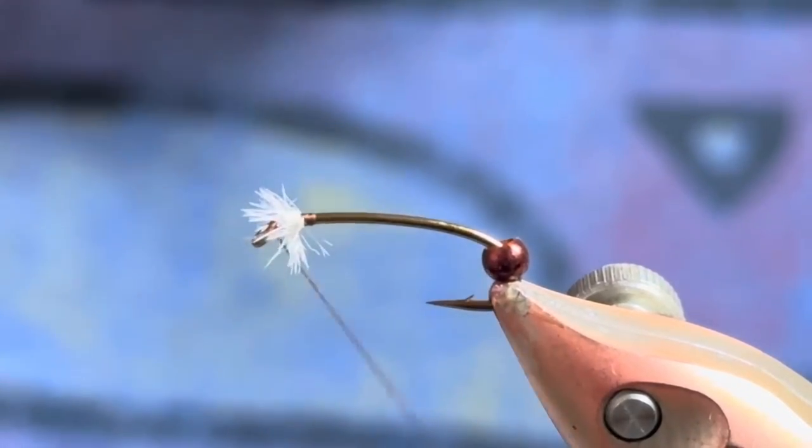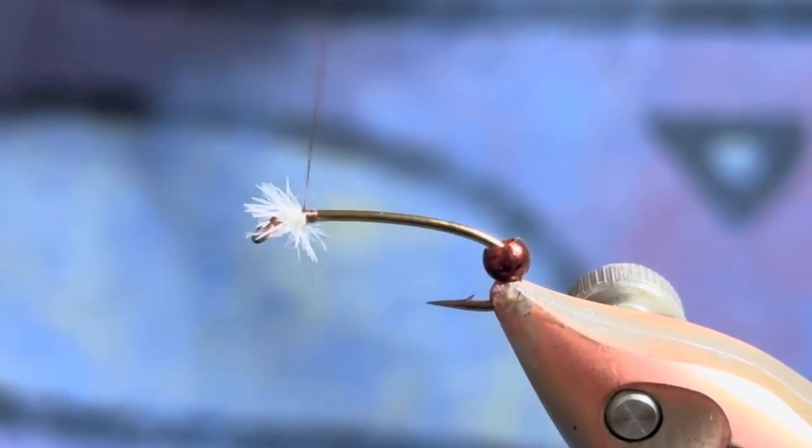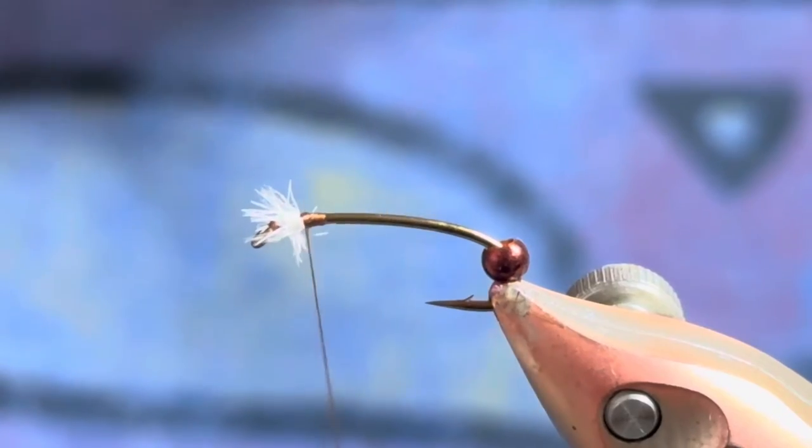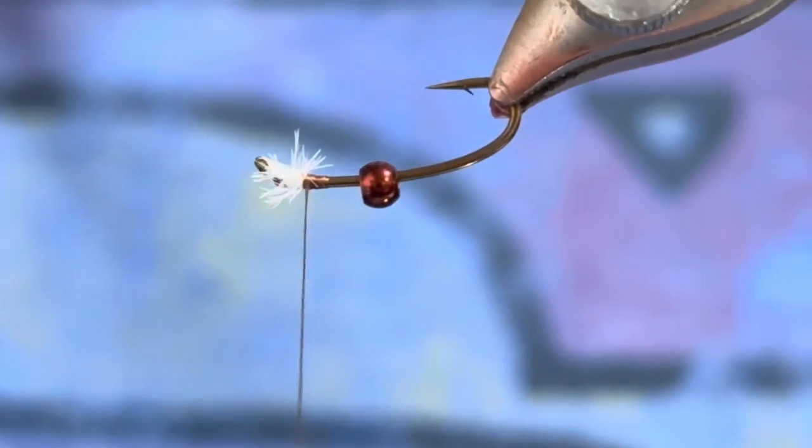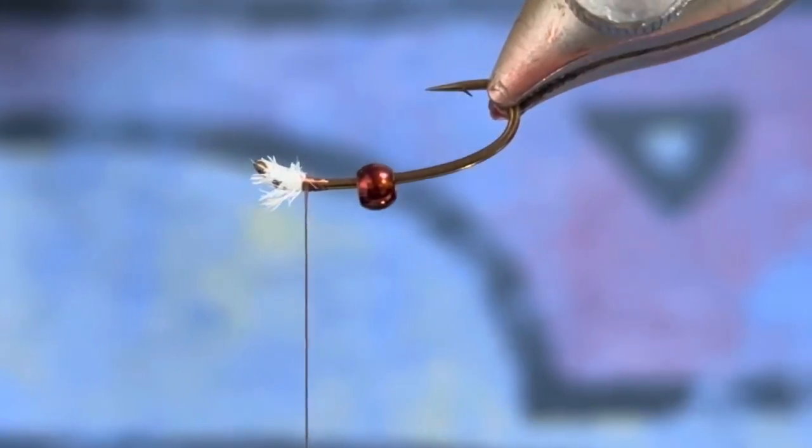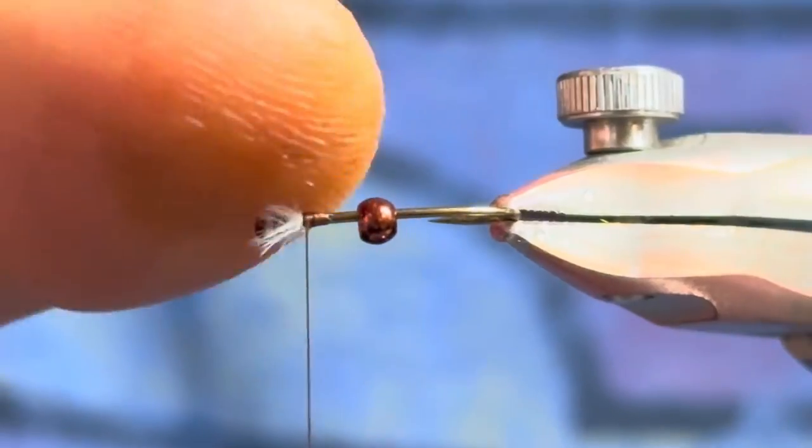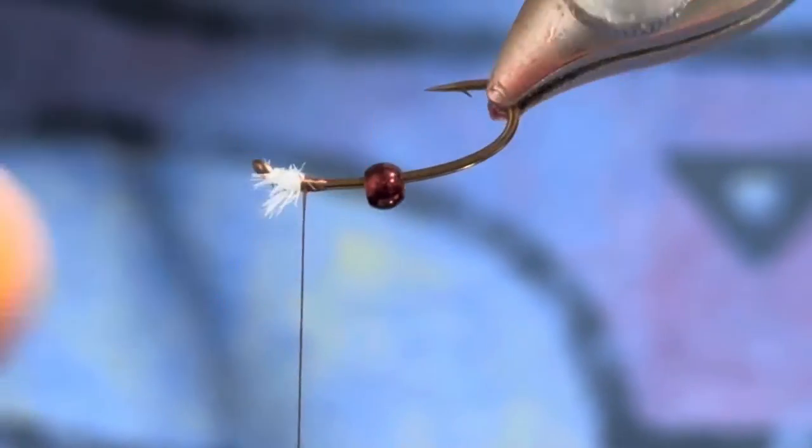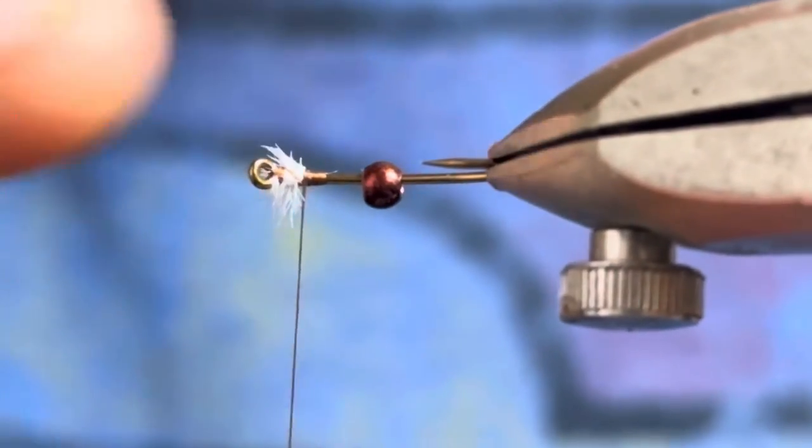So then I'm just going to pull all this forward and just scoot my thread right underneath. Then actually you can turn this over, you don't need much of this ostrich underneath, so the bead's going to cover up the majority of that.